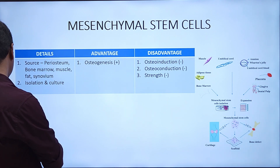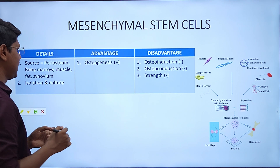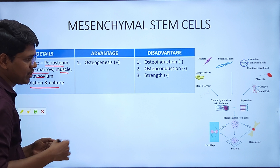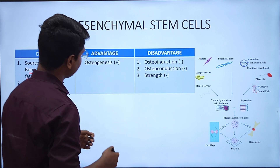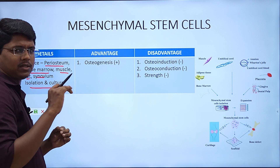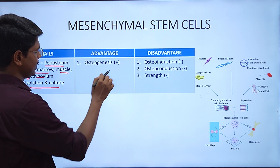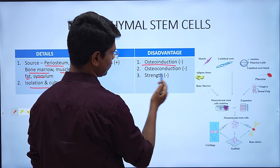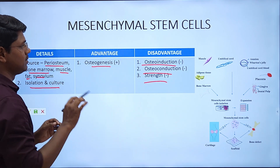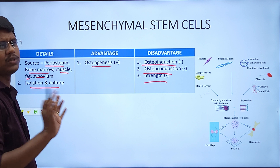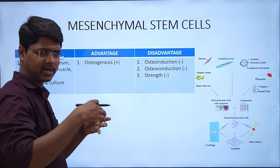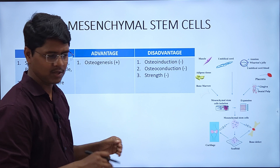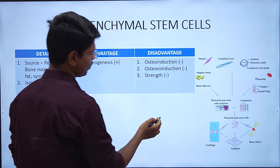Next is mesenchymal stem cells (MSCs). They are harvested in the lab; sources include periosteum, bone marrow, muscle, fat, and synovium. They are isolated, cultured, and then introduced to the fracture site. Since MSCs are a source of osteoblasts, they have fair osteogenesis property. They do not have osteoinduction, osteoconduction, or strength. You should know what these things are even if you don't know the exact procedure.